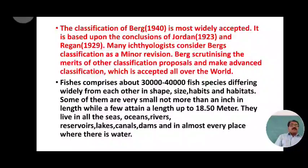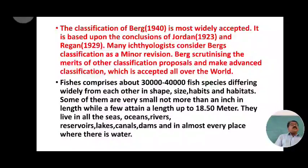Some fishes are very small — not more than an inch in length — while others are more than an inch in length, and a few can reach up to 18 to 50 meters in length. They live in all seas, oceans, rivers, reservoirs, lakes, canals, and dams — in every place where there is water.